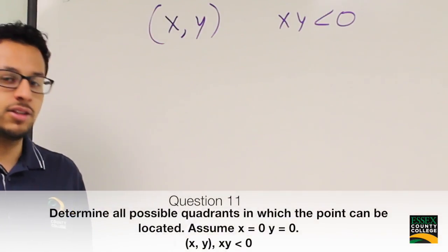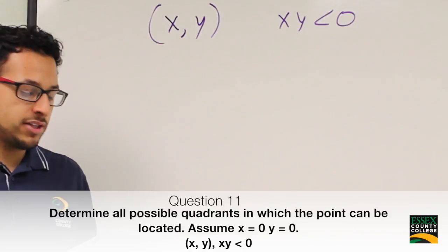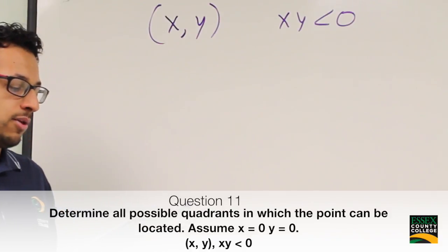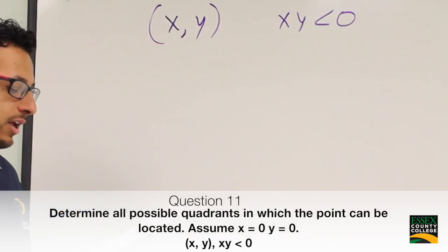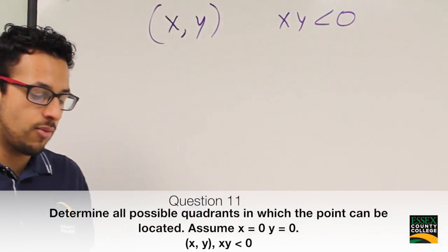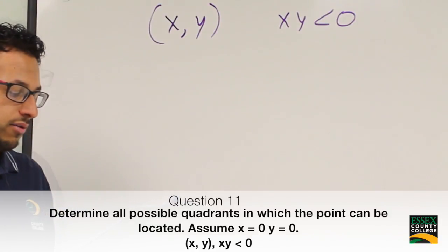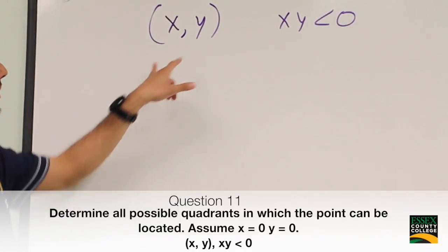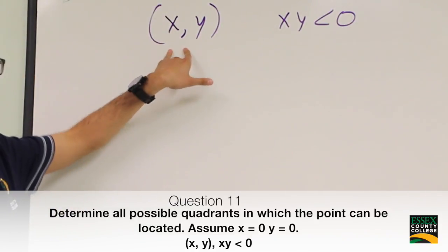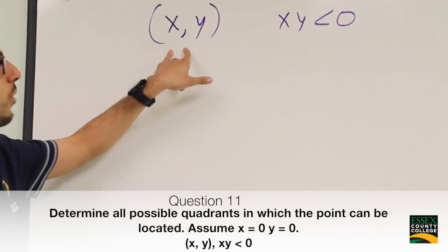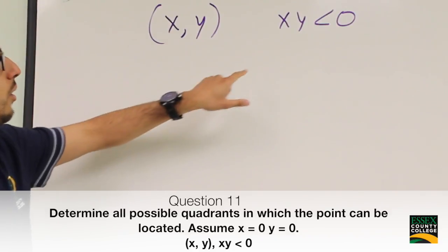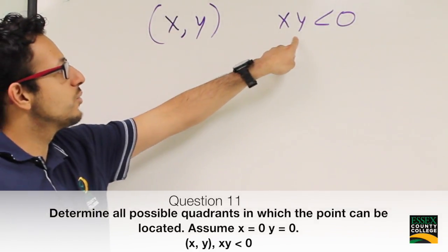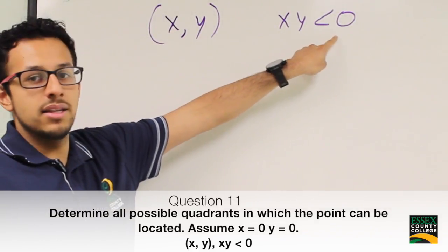The problem states: determine all possible quadrants in which the point can be located. Assume x cannot equal 0 and y cannot equal 0. We need to determine where this point is located in which quadrant when x times y is less than 0.